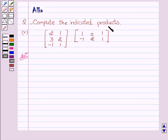We have to compute the indicated products. Our given matrix is 2, 1, 3, 2, minus 1, 1. And our second matrix is 1, 0, 1, minus 1, 2, 1.